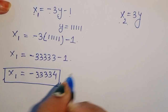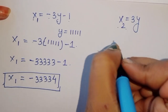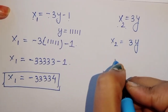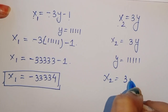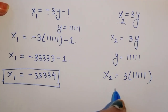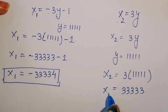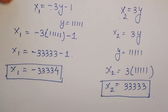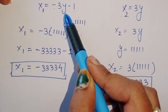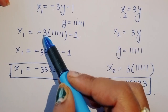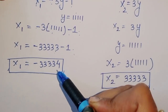Now for x2: x2 is equal to 3y. We know the value of y is 11111, so x2 equals 3 times 11111, which equals 33333. Substituting back: x1 is minus 3y minus 1, so minus 33000 minus 1 gives minus 33334.